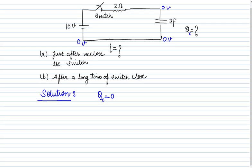Here we have a voltage source of 10 volts. Using Ohm's law, I = V/R = 10 volts / 2 ohms = 5 amperes. So just after closing the switch: charge on capacitor = 0, and current = 5 amperes.